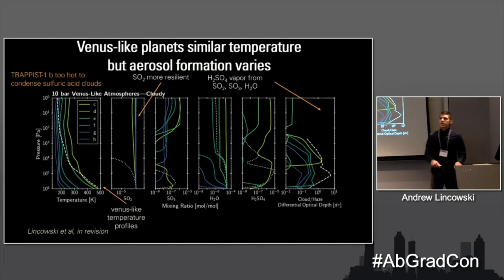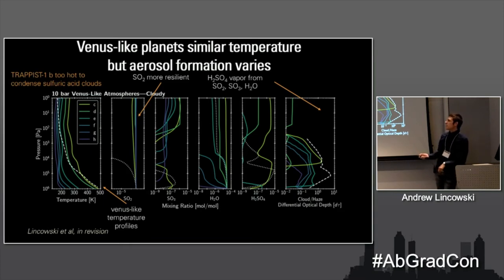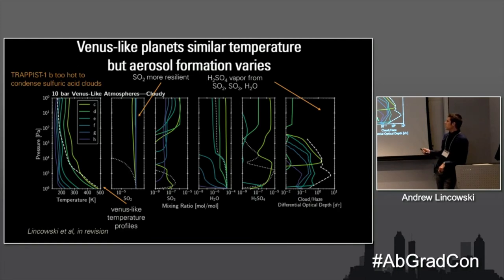For a Venus-like planet — and as far as I know this is the first real exo-Venus modeling — even a Venus around an M-dwarf still looks kind of Venus-like. Notably, TRAPPIST-1b is too hot to form sulfuric acid clouds, so it won't be quite as Venus-like. But the other planets can still form sulfuric acid clouds, as shown by the optical depth from the photochemical model. If you've followed exoplanet work with the Hubble Space Telescope, clouds can be a serious problem for transit spectroscopy.